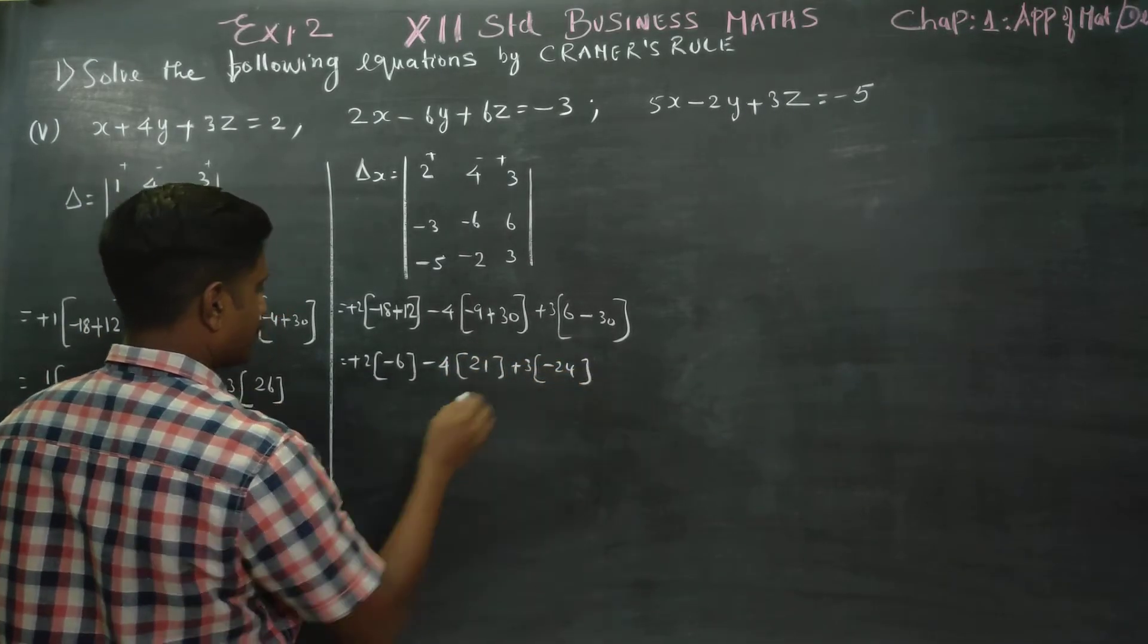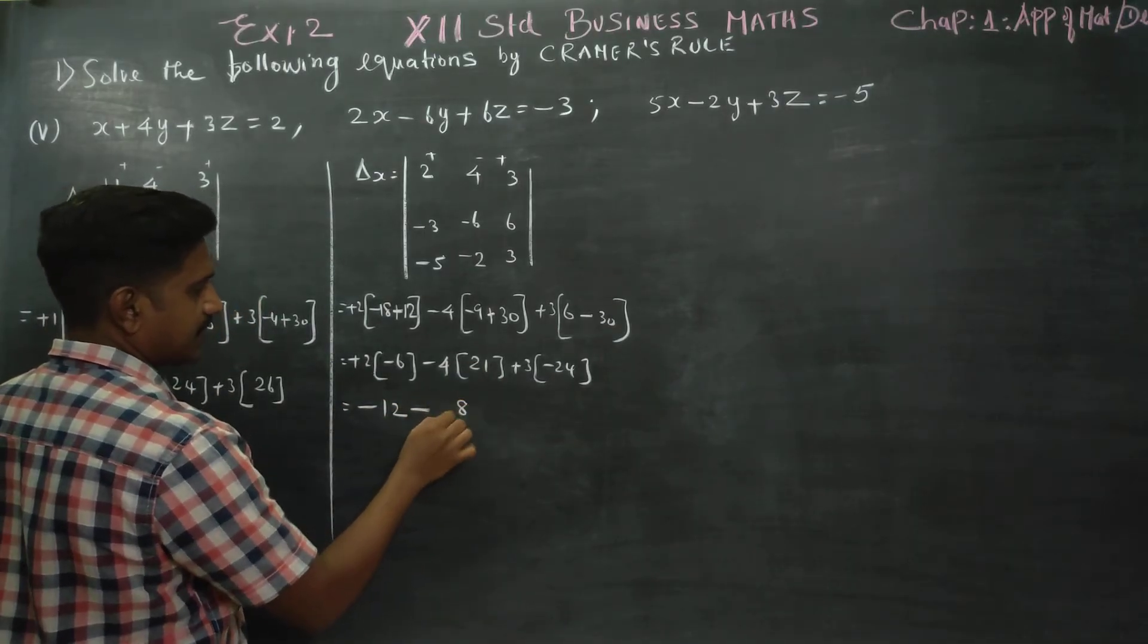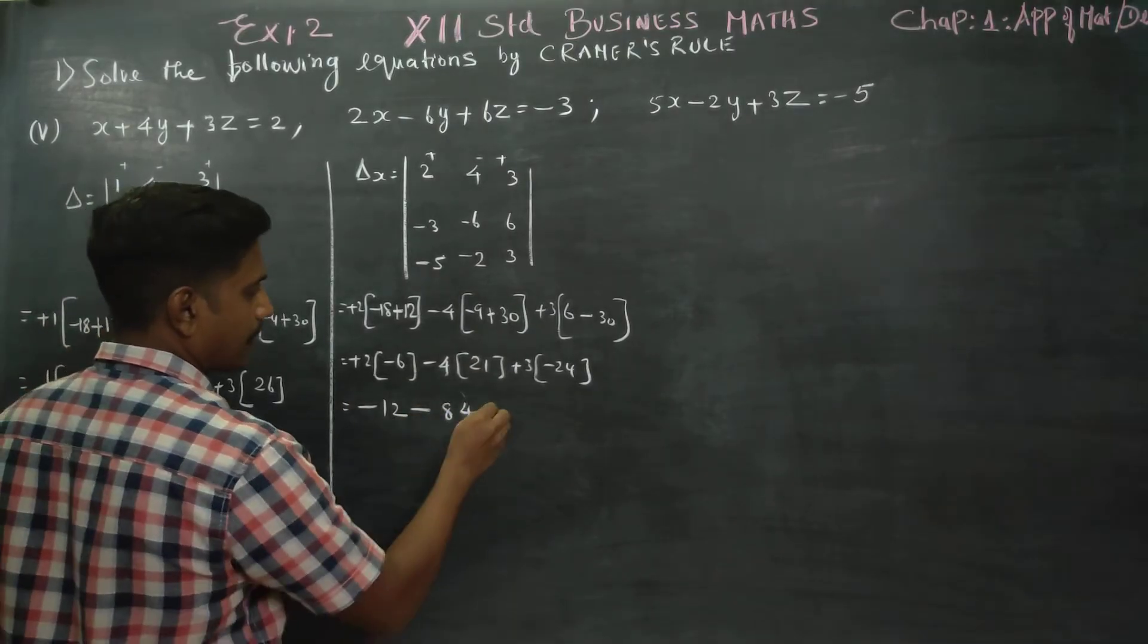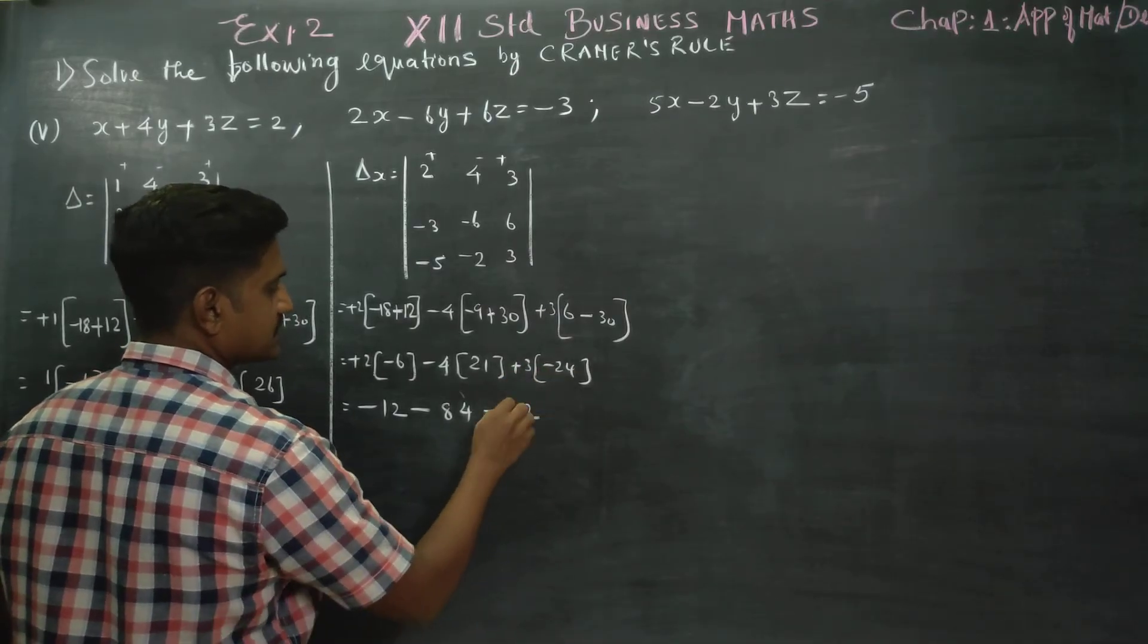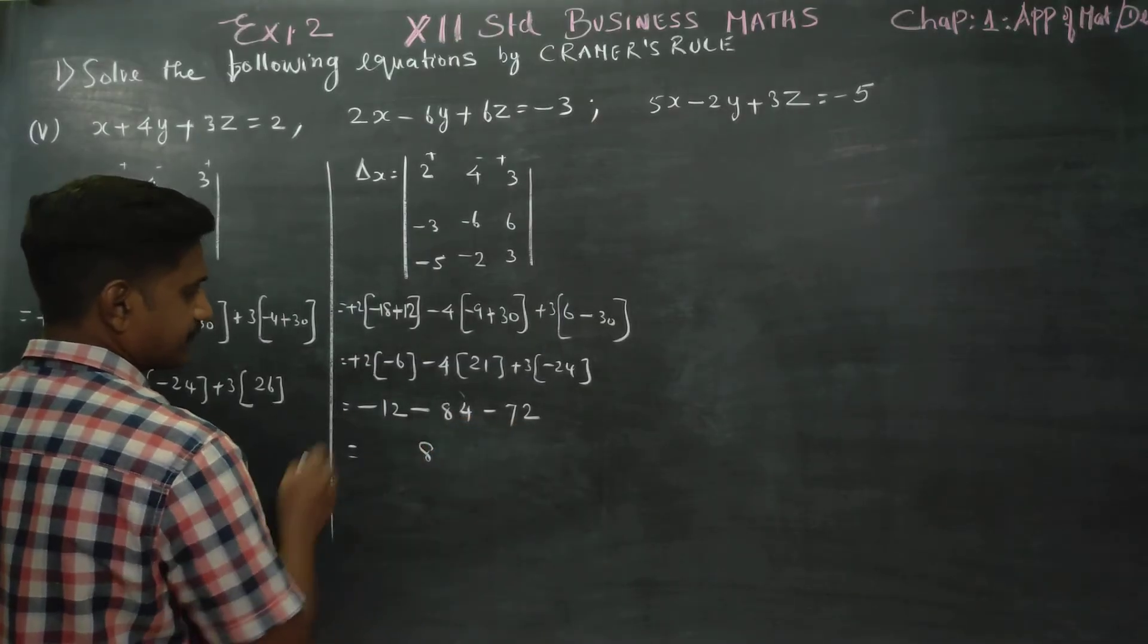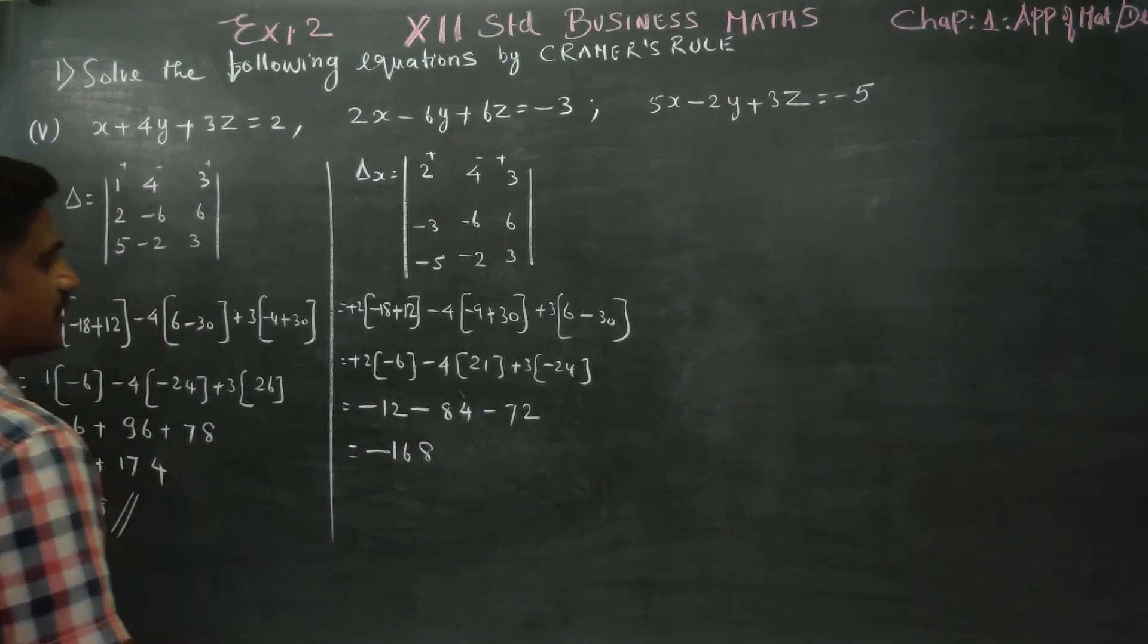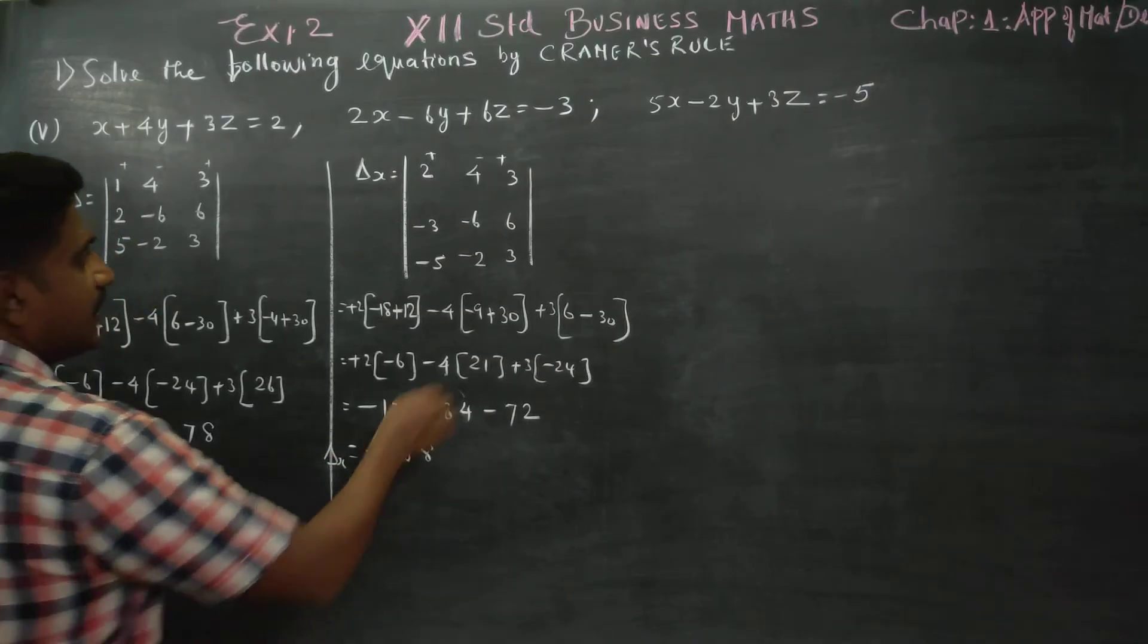It is minus 24, it is minus 12, minus 8, 8, 88, sorry 84, 4 ones are 4, 84. Plus into minus, minus 12, 6 is 72. 4 plus 2, 6 is, 6 plus 2 is 8, 7 plus 1 is 8, 8 plus 8 is 16, 168. Minus minus, your answer is minus 168. This is my delta x.